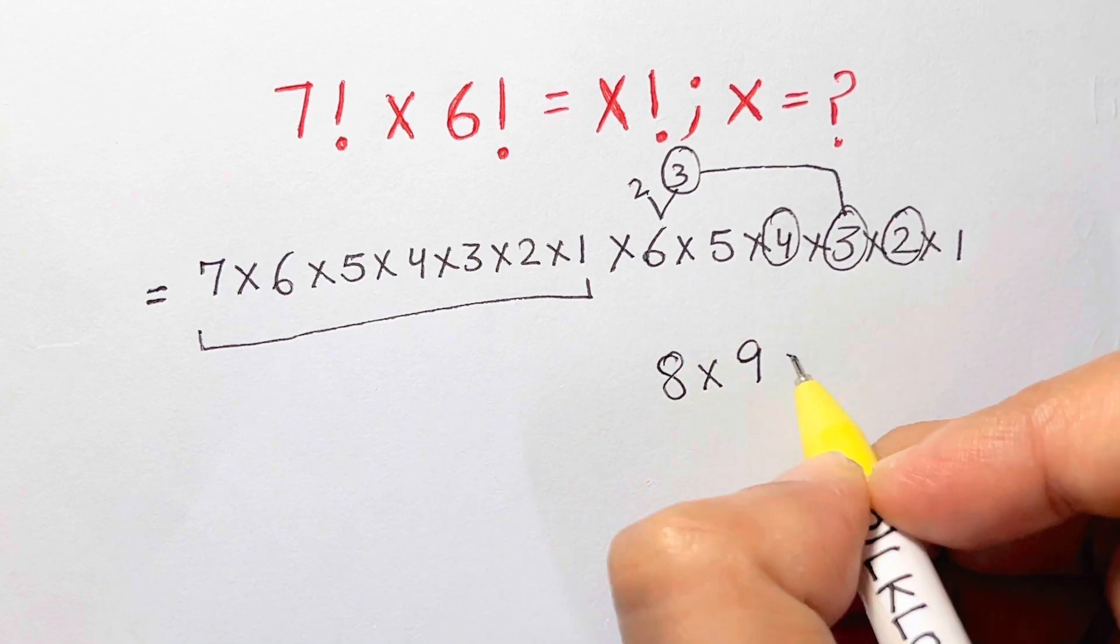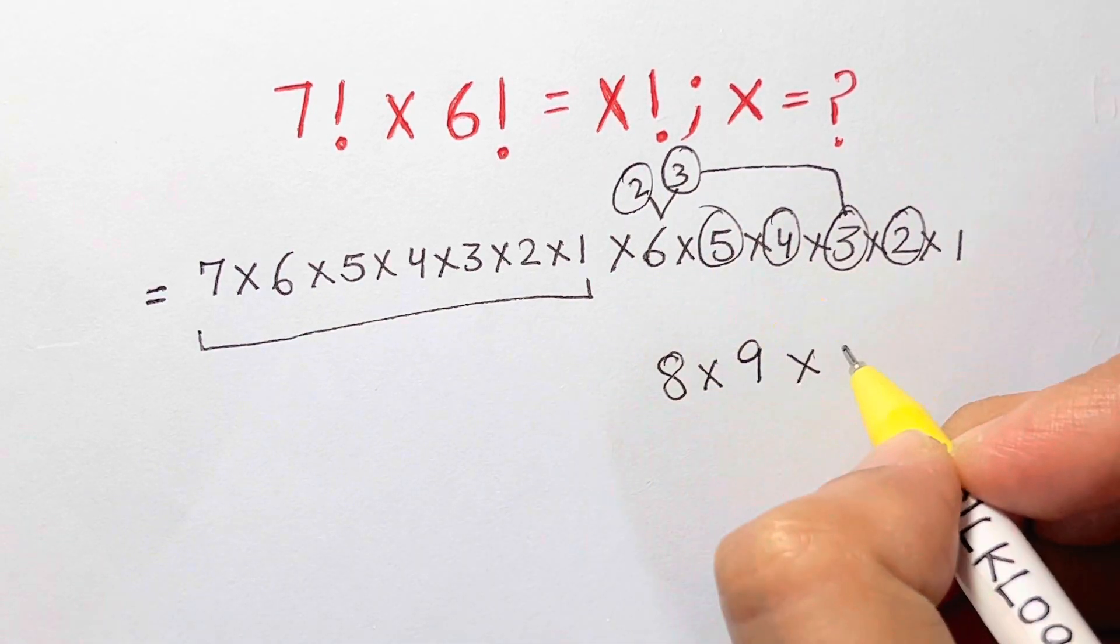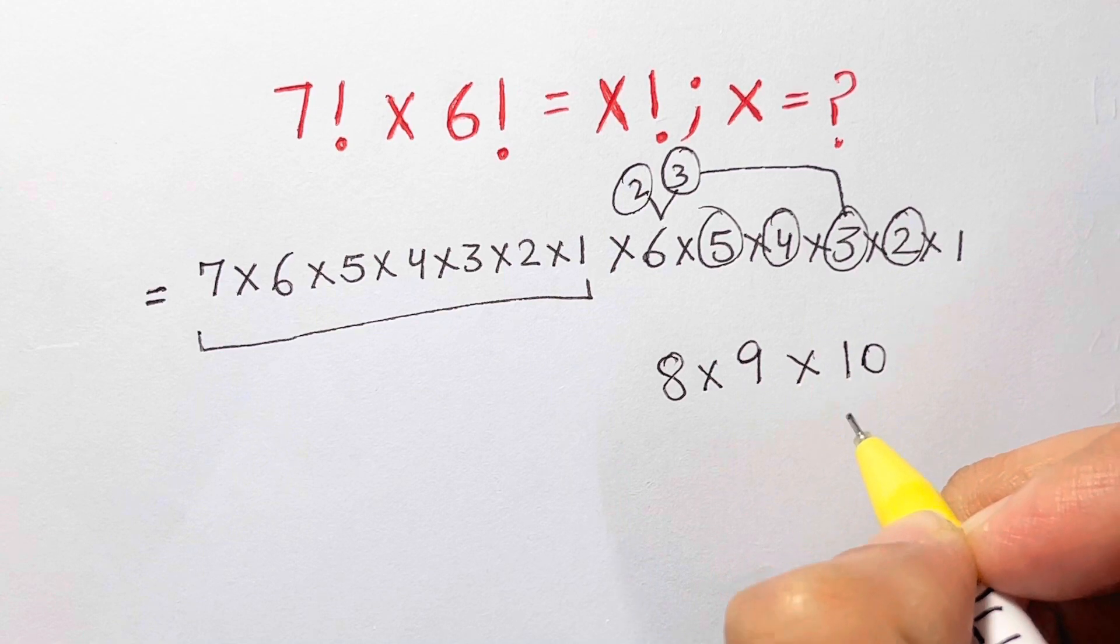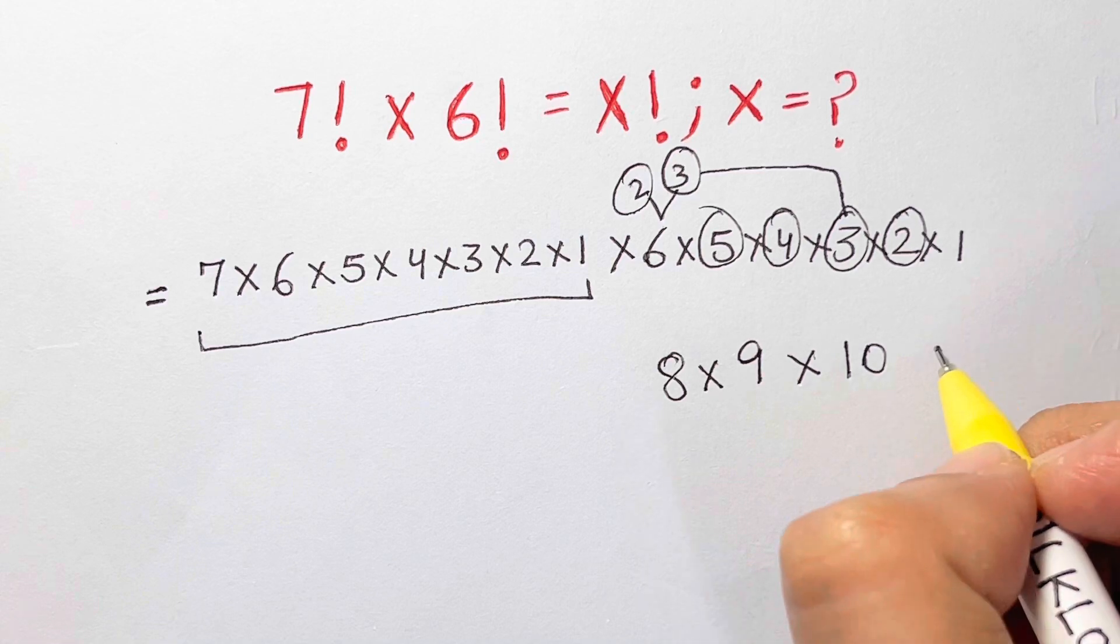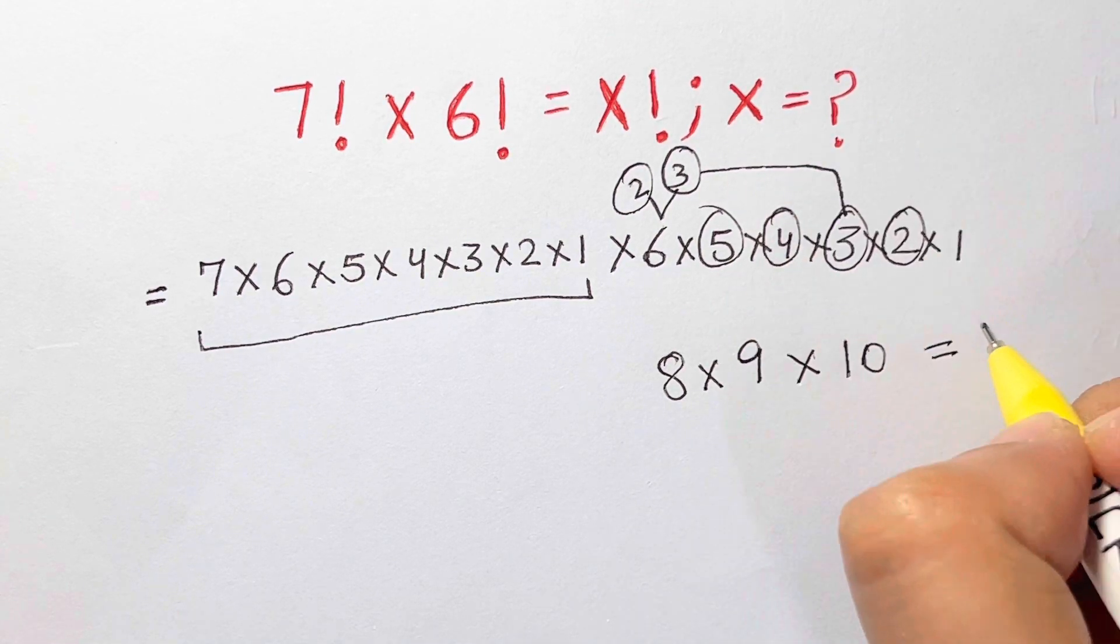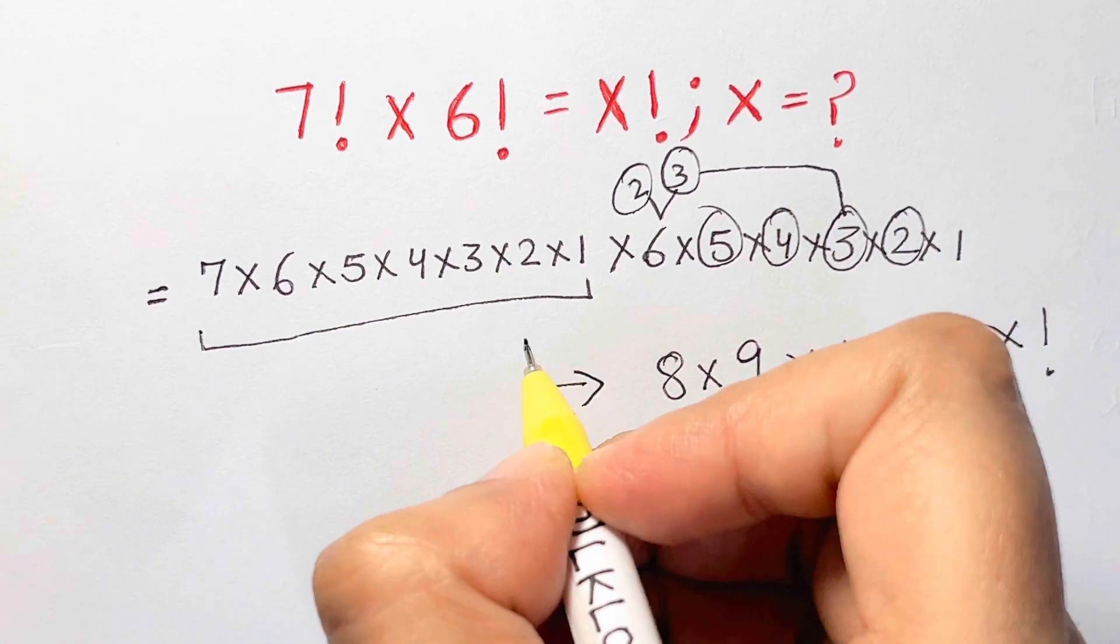8. Then times, then I have 2 and 5—2 times 5 makes 10, so I have 10. And that's it: 8 times 9 times 10, which is equal to x factorial as given. So this whole